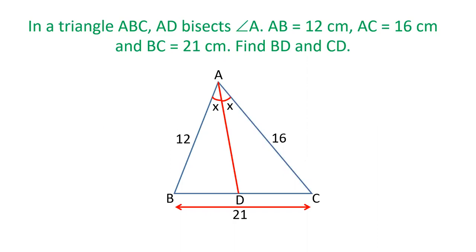Let's see what is the question given. It's given that triangle ABC, the three sides are given AB, BC and AC, all the three sides are given. An angle A is bisected by a line AD. We have to find out the length of BD and CD.